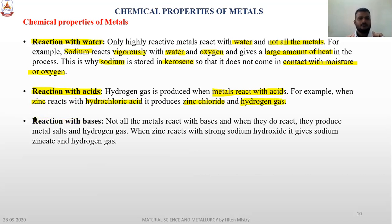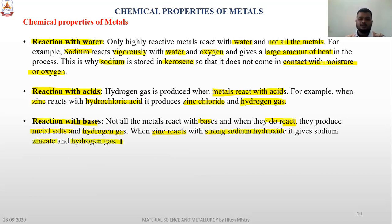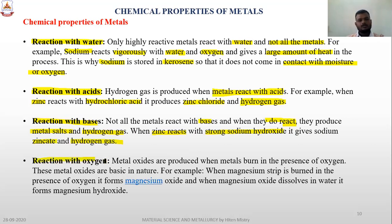Reaction with bases: not all metals react with bases, but when they do, they produce metal salt and hydrogen gas. For example, when zinc reacts with strong sodium hydroxide, it gives sodium zincate and hydrogen gas. Reaction with oxygen: when metals form metal oxides in the presence of oxygen, those metal oxides are basic in nature. For example, when magnesium is burned in the presence of oxygen, it forms magnesium oxide.